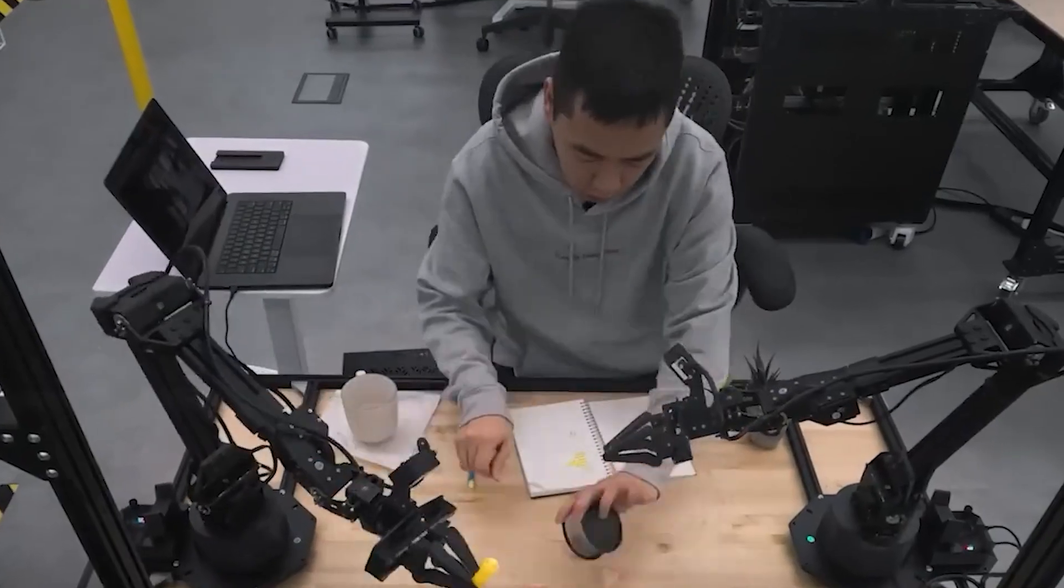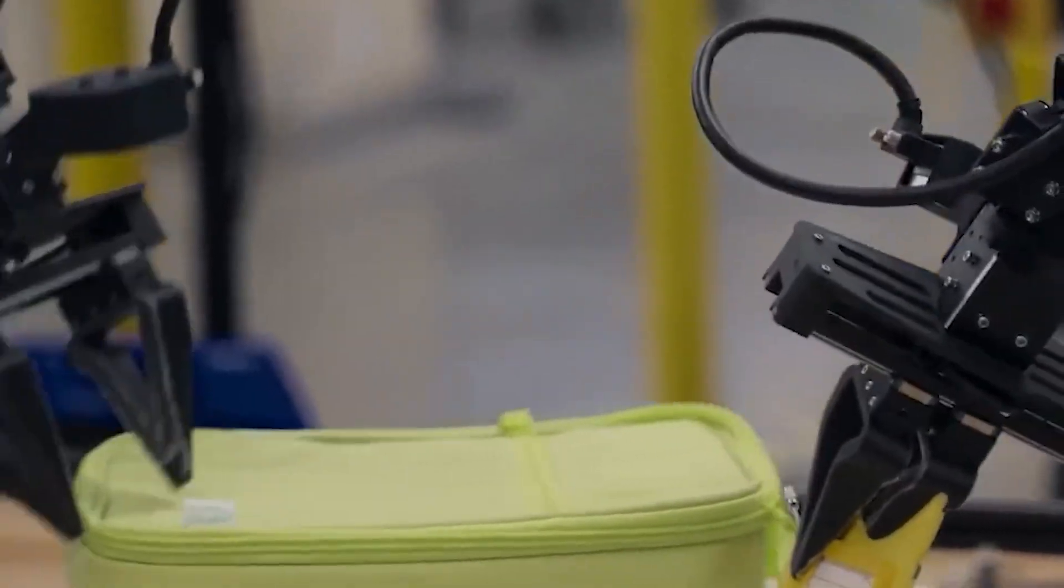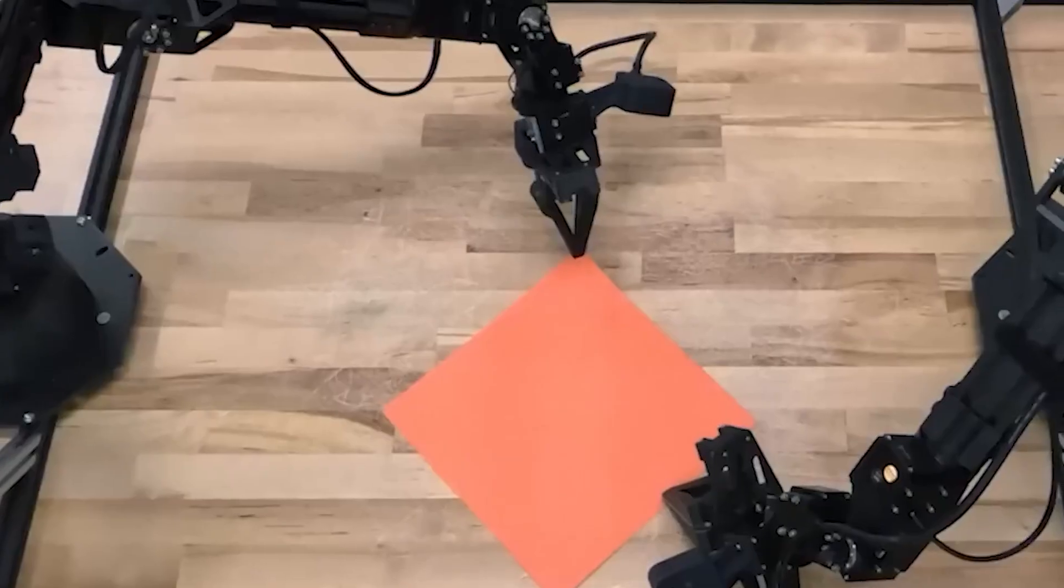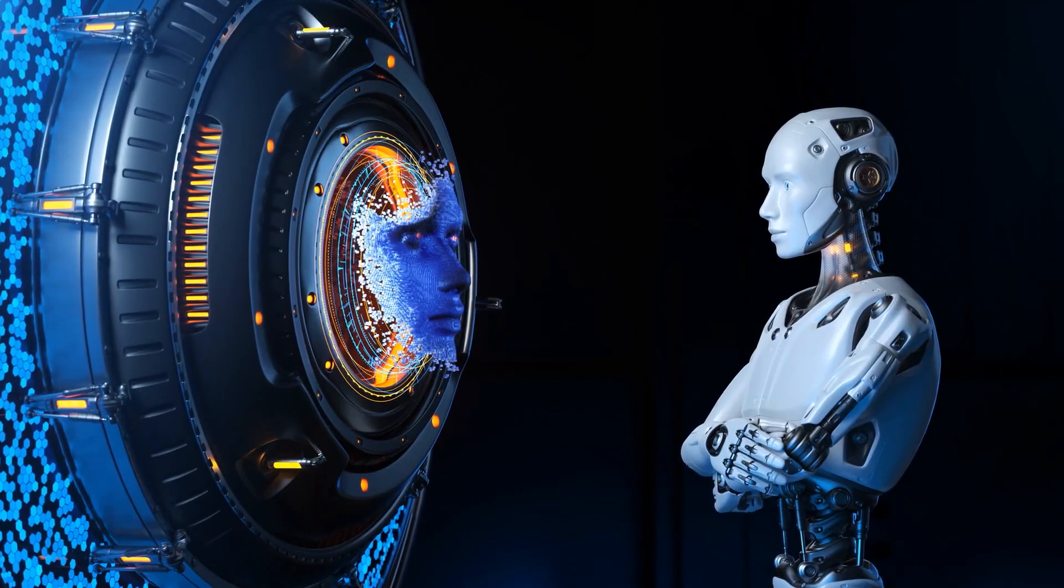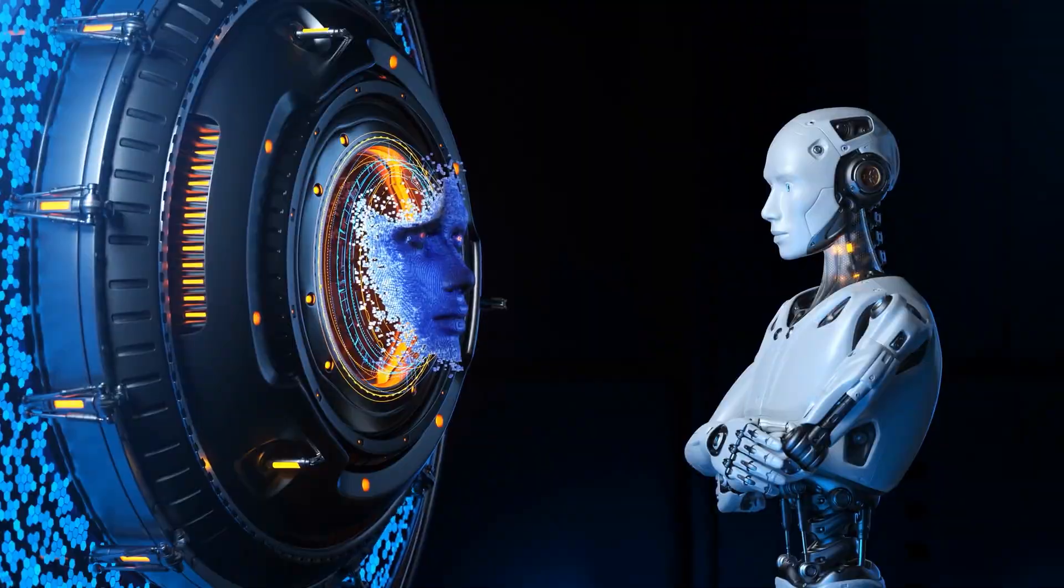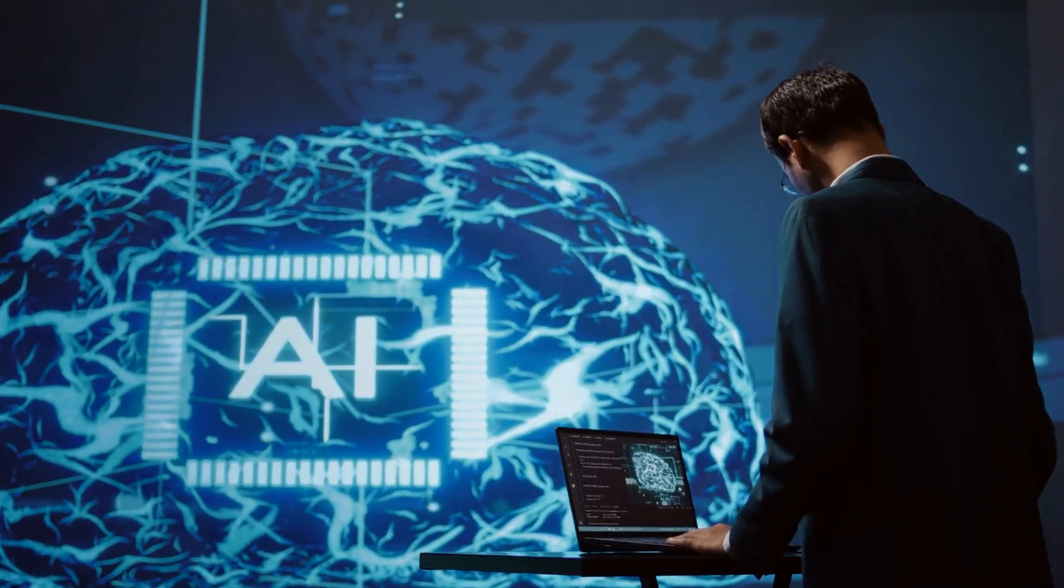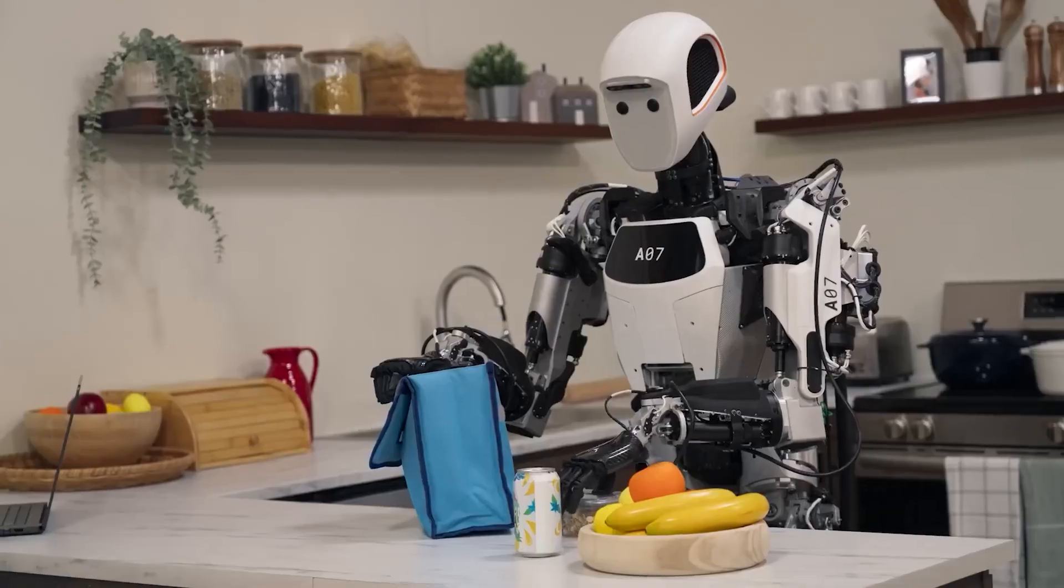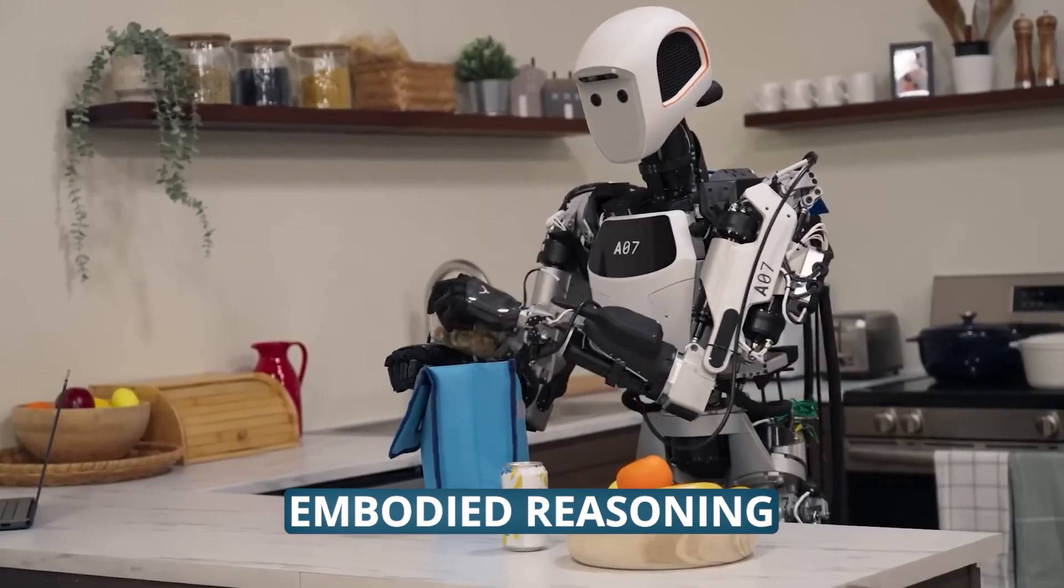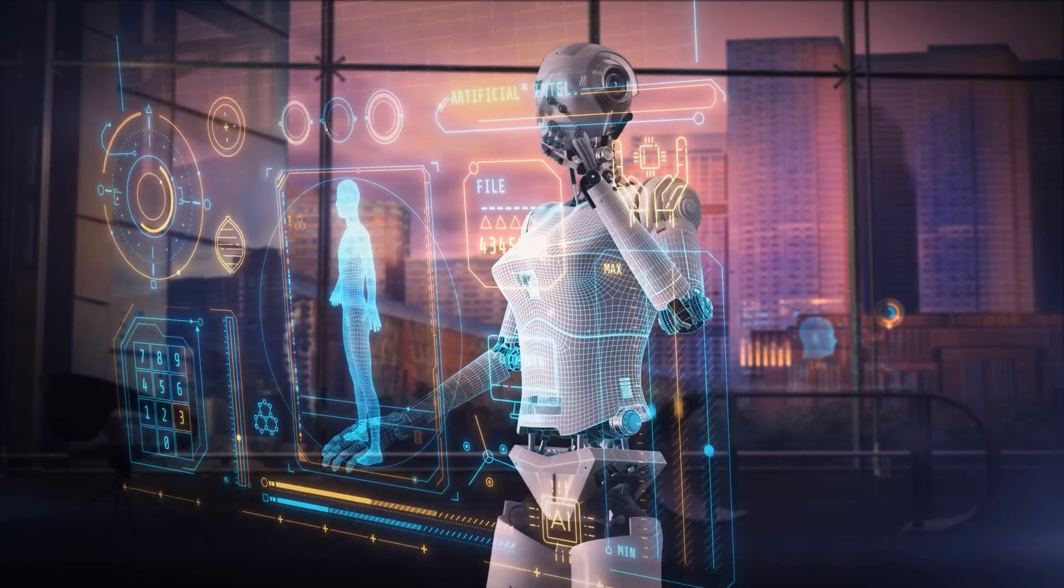Stick around because I'm going to reveal something about these robots that Google didn't mention in their press release that might completely change how you feel about all of this. Let me break down what Google actually announced, because it's mind-blowing. They've created two AI models specifically designed for robotics: Gemini Robotics and Gemini Robotics ER. ER stands for Embodied Reasoning. I've been following robotics for years, and here's why this is different.